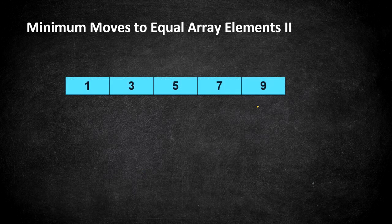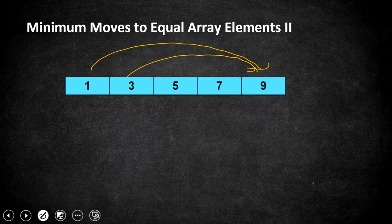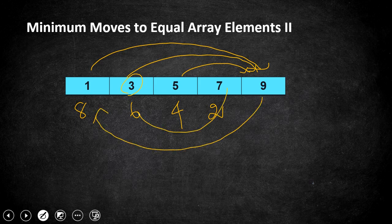Consider this example array. If you are trying to make 1 to 9, and 3 to 9, and 5 to 9 — making 1 to 9 itself is going to take eight operations. Same way, 3 to 9 takes six, 5 to 9 takes four, and 7 to 9 takes two operations.